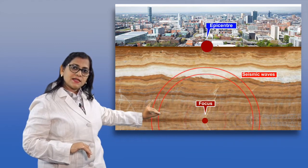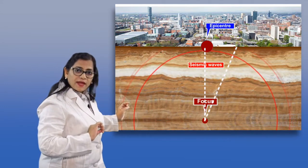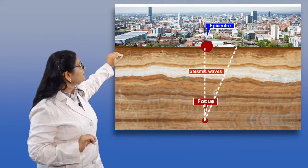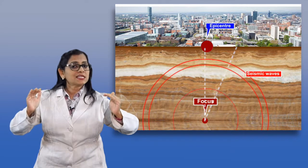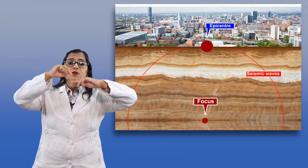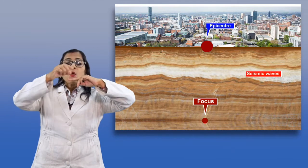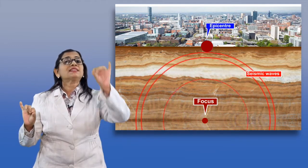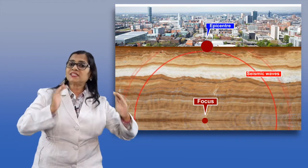From the focus, seismic waves travel in the form of longitudinal and diagonal waves — called primary and secondary waves — to reach the surface of the earth. From the epicenter, as we travel outwards, the intensity of the tremor decreases. So: the focus is the point of origin of the earthquake; the epicenter is the point on the surface of the earth directly above the focus, where the maximum damage is caused. As we travel away from the epicenter, the intensity of the quake decreases.